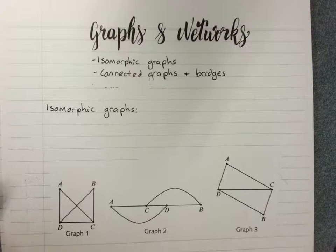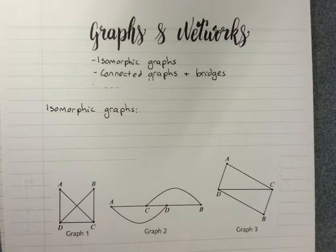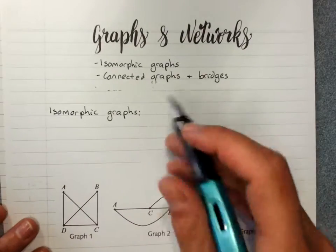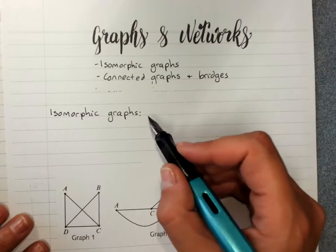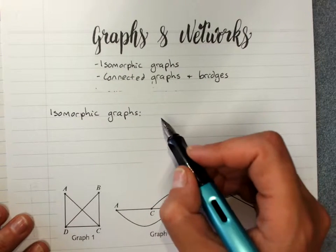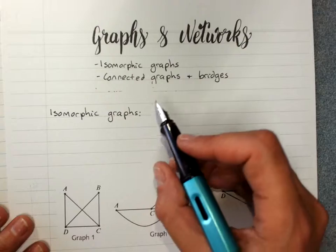Graphs and networks, isomorphic graphs, and connected graphs and bridges. Isomorphic graphs are graphs that look different but actually contain the same information and could represent the same situation.